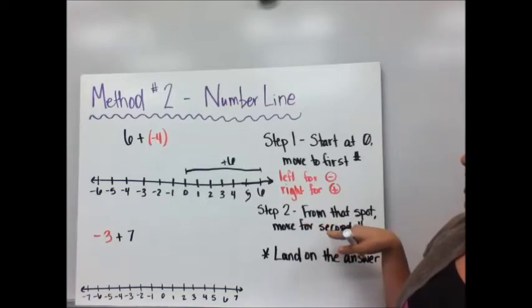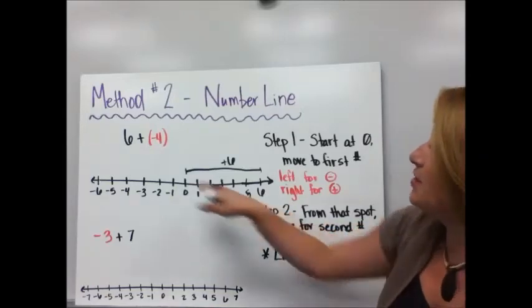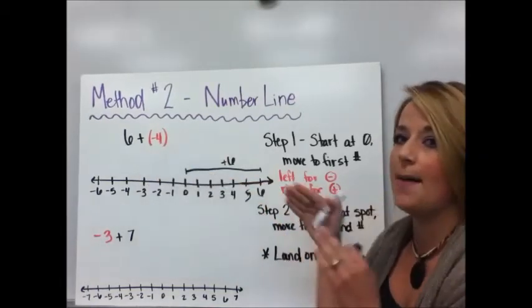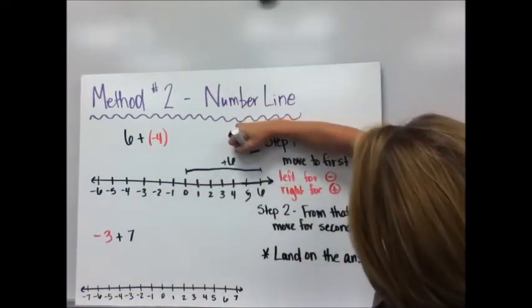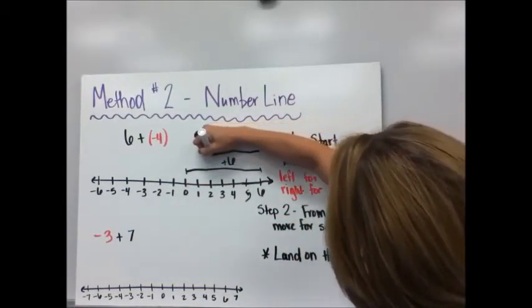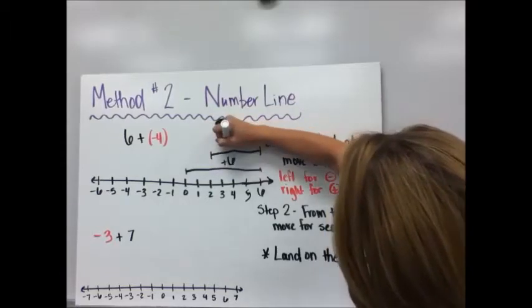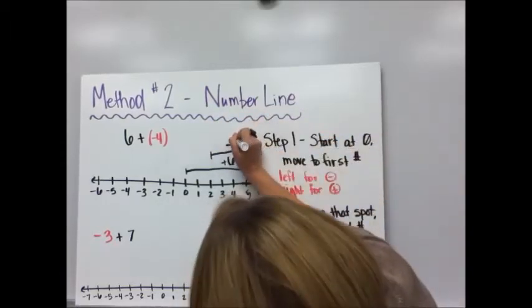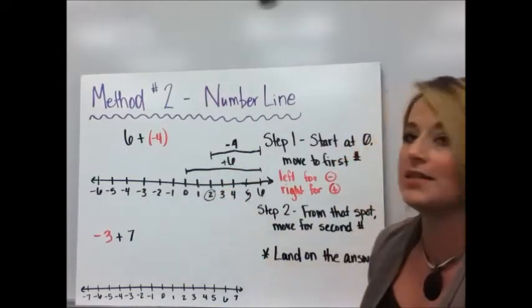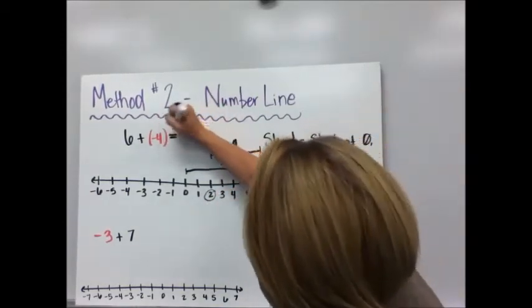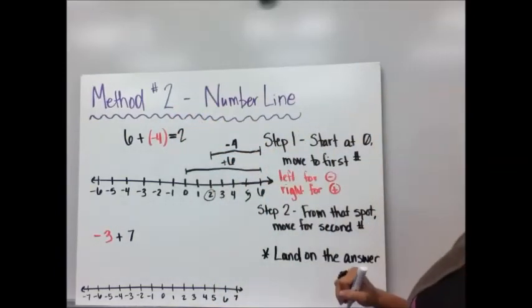So we're going to come over six spots for that first number. Then from that spot, I'm going to move for the second number. So my second number is a negative four. So I'm going to move to the left four spots. One, two, three, four. So I've moved four spots to the left. What did I land on? I landed on positive two. So my answer is positive two.